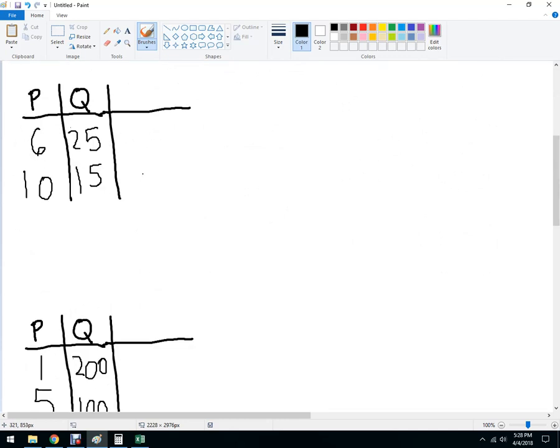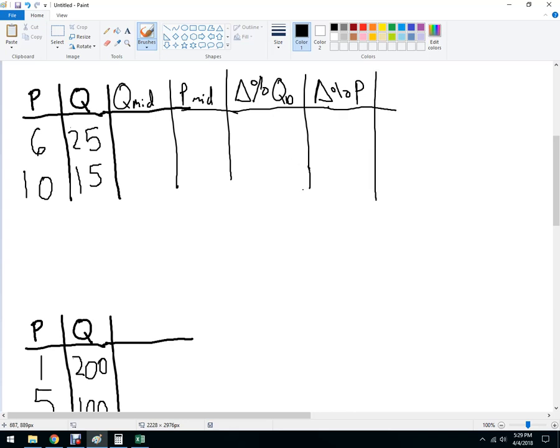Okay, let's do two more. Quantity midpoint, price midpoint - I'll do this one a little faster here. Percent change quantity demanded, percent change price, and what is the elasticity? On this one, the quantity midpoint is 20 and the price midpoint is 8. So 25 minus 15 over 20 is 10 over 20, so this is 50%.